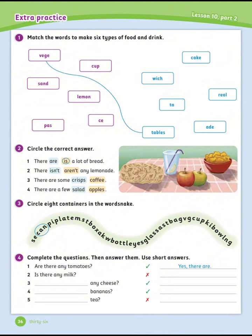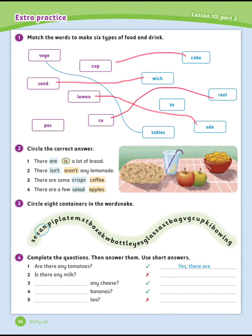Listen 10, part 2. Exercise number 1: Match the words to make 6 types of food and drink. Let's see the answers. Number 1 is done for you: There is a lot of bread. Number 2: There isn't any lemonade. Number 3: There are some crisps. Number 4: There are few apples.